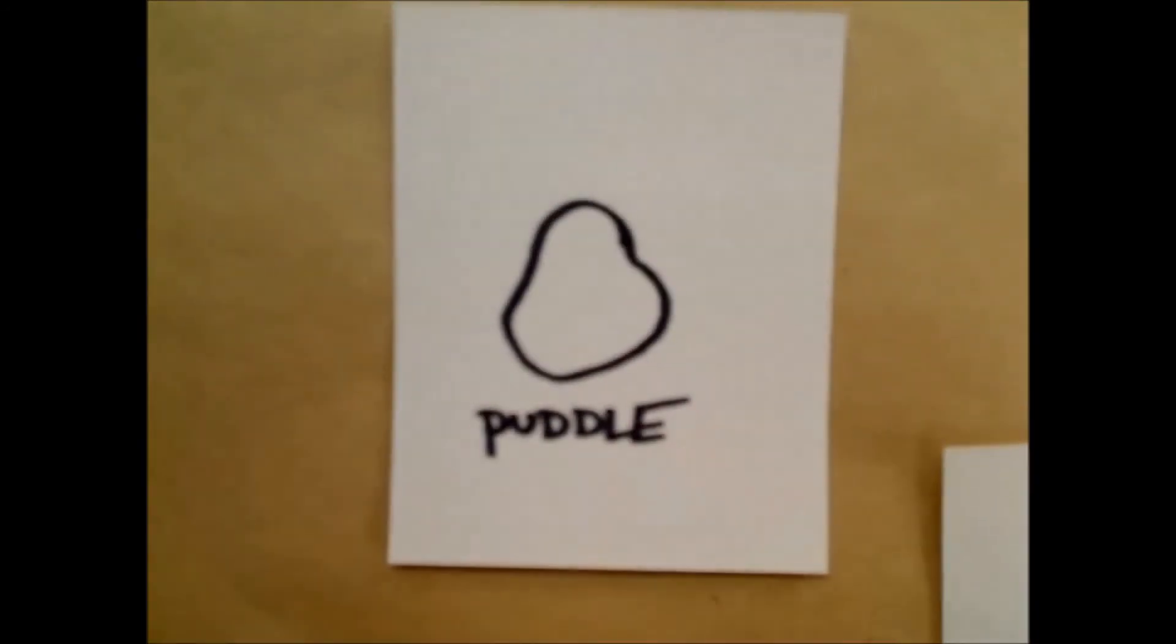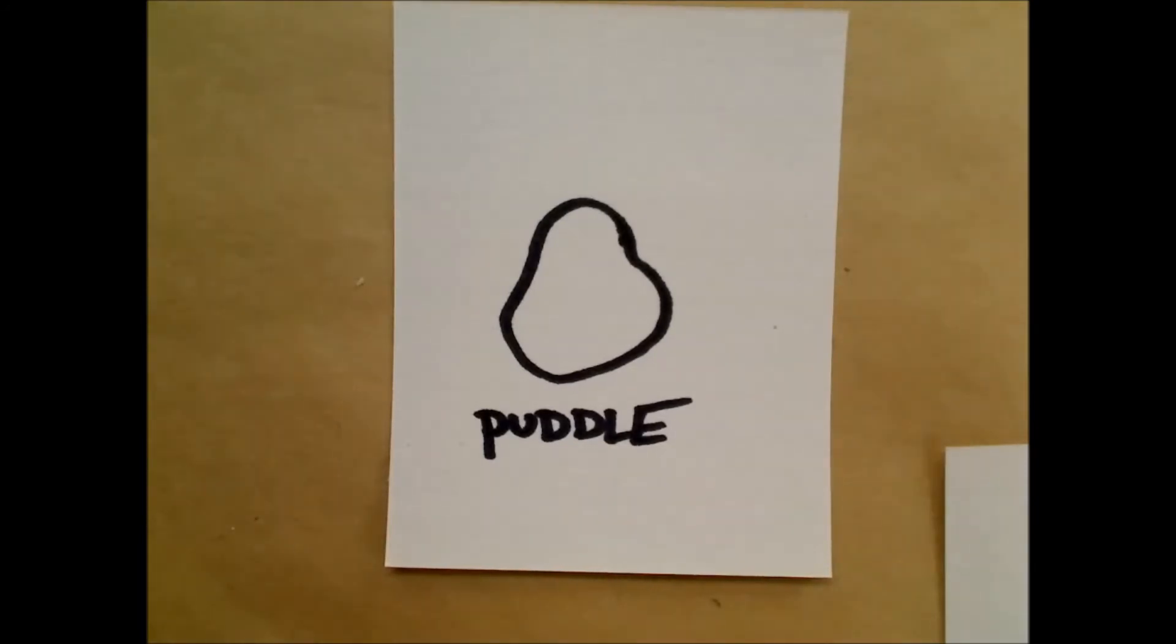As opposed to if I didn't increase that surface area, it would take half a day for that puddle to evaporate or more. And that's just a simple example of how you increase surface area that you see in daily life. Again, that wasn't so much a chemical reaction as it was a phase change of evaporation, but we see this all the time.